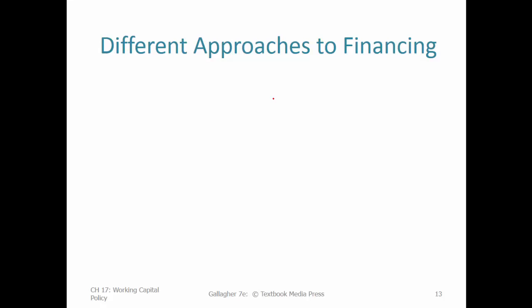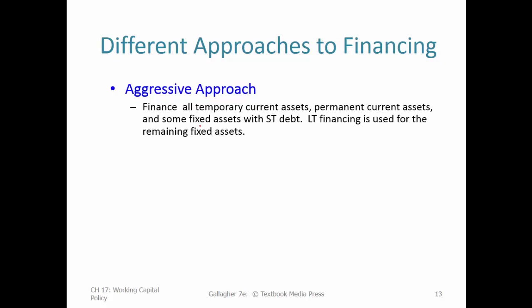The big takeaway is that there are three different approaches to working capital management: aggressive, conservative, and moderate. The aggressive approach focuses on the profitability side of the trade-off — making as much profit as possible while minimizing liquidity. This means financing all temporary current assets, permanent current assets, and even some fixed assets with short-term debt. You might already be thinking that's risky — and yes, it's risky to finance everything with short-term debt and be highly leveraged.